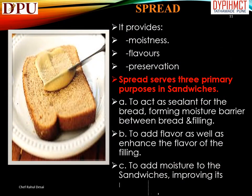Spreads provide moistness, flavors, and preservation. A spread serves three primary purposes in sandwiches: (a) to act as a sealant for the bread, forming a moisture barrier between bread and filling; (b) to add flavor as well as enhance the flavor of the filling; and (c) to add moisture to the sandwich, improving its mouthfeel.